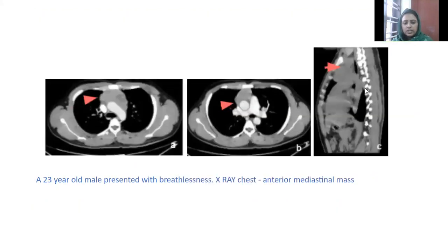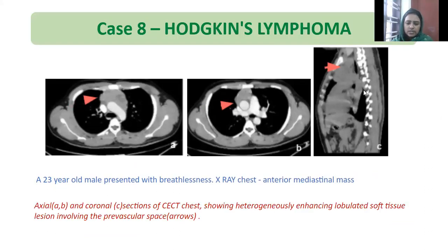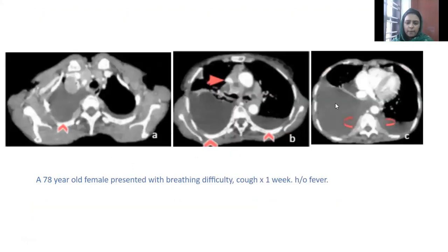Next case: a 23-year-old male who presented with breathlessness. X-ray showing anterior mediastinal mass. Axial and coronal CT chest images showing heterogeneously enhancing lobulated soft tissue lesion involving the pre-vascular space. Biopsy came as Hodgkin's lymphoma.